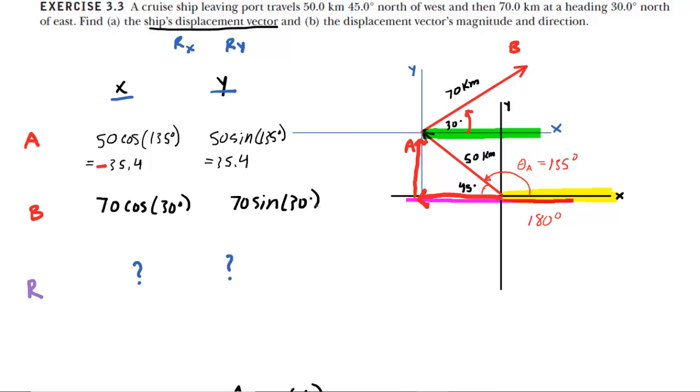Once again, pick up your calculator. Make sure it is set to degree mode. 70 times the cosine of 30 is about 60.6, and then 70 times the sine of 30 is exactly 35. In that case, both the x and y components are positive. Check back at the diagram to make sure that makes sense. Now, to get the resultant x and the resultant y is very simple. You just add the x components together to get the resultant x, and add the y components to get the resultant y. For the x, we take the negative 35.4 and add 60.6, and we get about 25.2. So rx is 25.2 kilometers. And then for ry, you take 35.4 and add 35, and you get 70.4. So ry is 70.4 kilometers. That completes part A of the question.